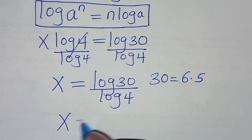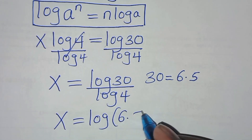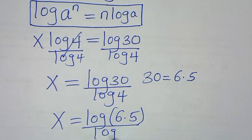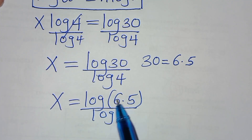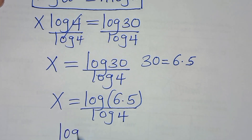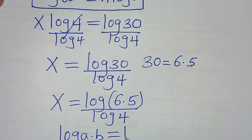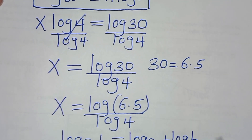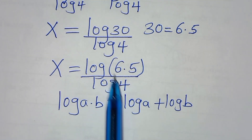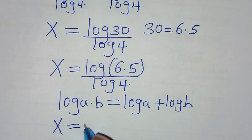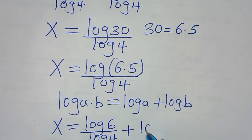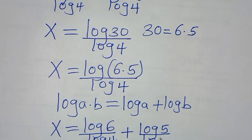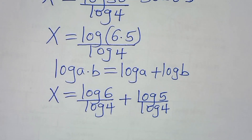Substituting this, we have x equals log(6 times 5) divided by log 4. Now log(6 times 5) is in the form of log(a times b), which we can express as log a plus log b. Applying this property, x equals log 6 divided by log 4, plus log 5 divided by log 4.